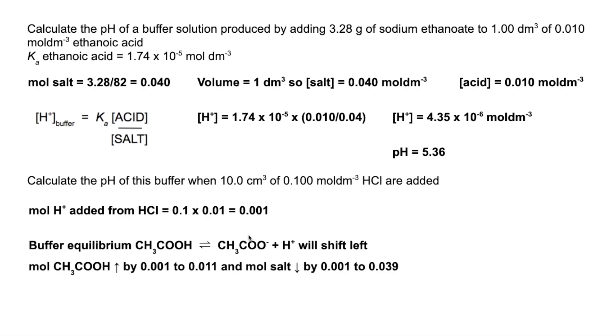So the moles of ethanoic acid are going to increase by that 0.001, so they'll go from their original moles up to this many moles. The moles of salt will decrease by that amount because equilibrium's going that way, so that will go down from the 0.04 moles that we had up here to 0.039 moles.